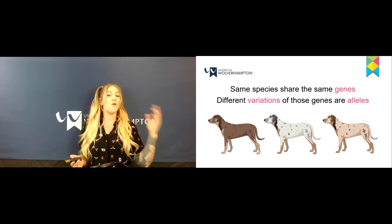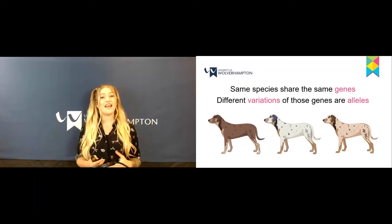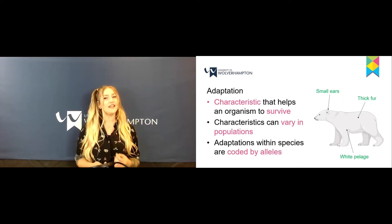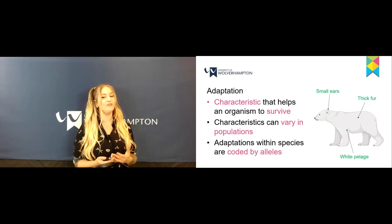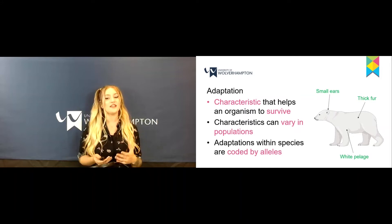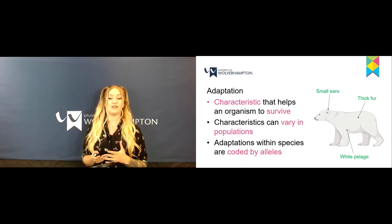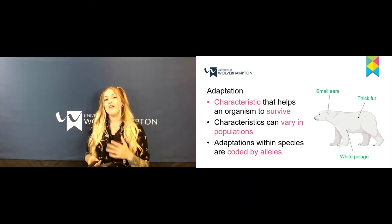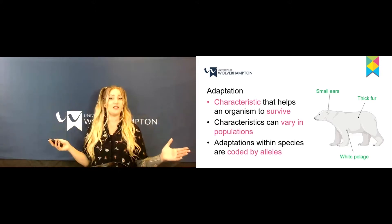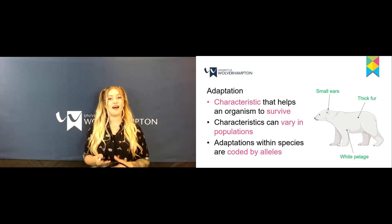and they are called alleles, and these can affect the morphology of the animal — for example, how many spots they have, what their primary fur colour is, and any adaptations that they have too. But what actually is an adaptation? An adaptation is a characteristic which helps the individual animal survive within its environment. These can vary within populations, so it's not across the whole species, it's per individual, and they are coded by their alleles.